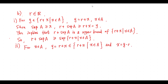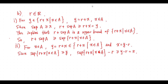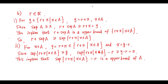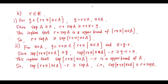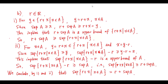Now, for x in A, Y equals R plus x is in this set, and x equals Y minus R. Since supremum of this set is greater than or equal to Y, which is greater than or equal to x, this implies supremum of this set minus R is an upper bound of A. So, supremum of this set minus R is greater than or equal to supremum A, meaning supremum of this set is greater than or equal to R plus supremum A. We thus conclude this identity.